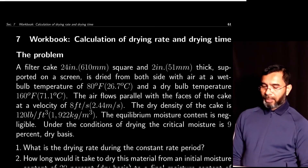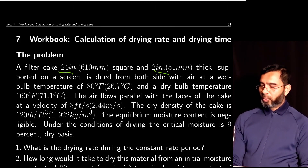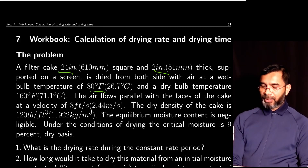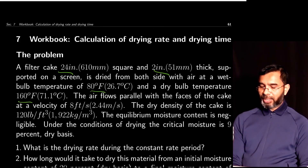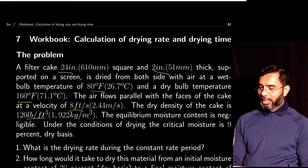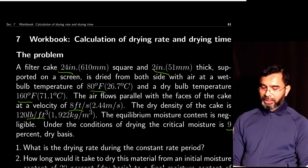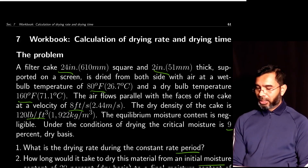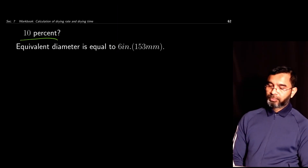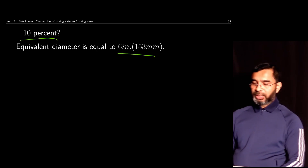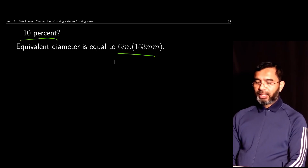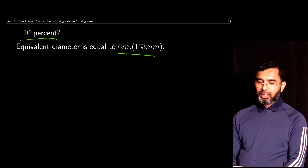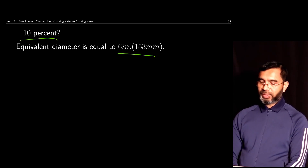The third problem involves a filter cake 24 inches by 2 inches supported on a screen, dried from both sides. Air has a wet bulb temperature of 80°F and a dry bulb temperature of 162°F, flowing parallel to the cake faces. The dry density and air velocity are given; the equilibrium moisture content under drying conditions is negligible; and the critical moisture content is 9%. The equivalent diameter is 6 inches. We need the drying rate during the constant rate period and the time to dry from 20% to 10% moisture — this is similar to the previous problem.